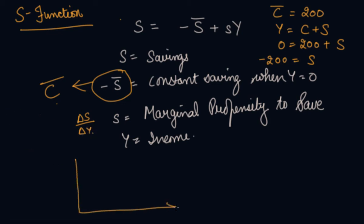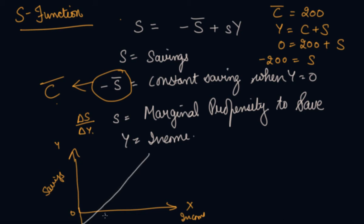In this way, we can draw the graph of savings against y. Your savings are negative at the initial level when your income is zero — this is the break-even point. This is your saving, this is your s̄. So your saving function is: saving is equal to minus s̄ plus s into y.